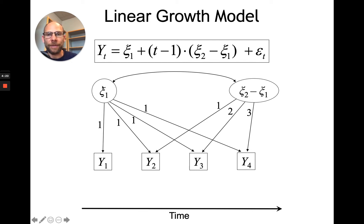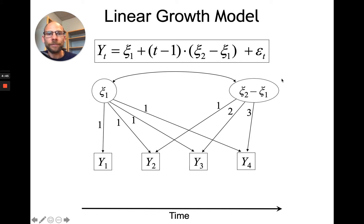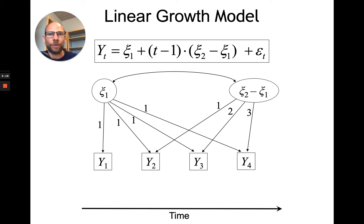This is a latent mean structure model where we estimate the latent mean of the growth factors. We estimate the mean of the intercept factor, which gives you the average starting point, and the variance of the intercept factor, which measures individual differences at the onset. We also estimate the mean of the slope factor, which indicates the average rate of change — the average slope of the average growth curve — and the variance of the slope factor, which tells you how much people differed in how much they changed.